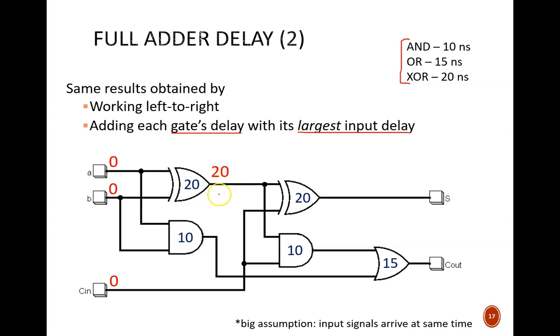The input delay for this AND is 0. I add that to 10 through the gate, and the result is 10 nanoseconds. Now it gets interesting. For this exclusive OR gate, the two input delays are 20 and 0. I take the largest of these, 20, and add that to 20 through the gate. The result is 40 nanoseconds. For this AND gate, the two input delays are 20 and 0. I add the starting 20 to the 10 through the gate. The result is 30 nanoseconds.